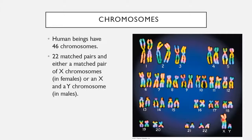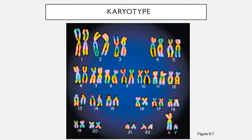The X and Y chromosomes — one from mom and one from dad — determine your sex. If you have two X chromosomes, you are female. If you have an X chromosome from mom and a Y chromosome from dad, you will be male. Moms always give their offspring an X chromosome; dads have an X and a Y and can give either. This full picture of all of an organism's chromosomes is called a karyotype.